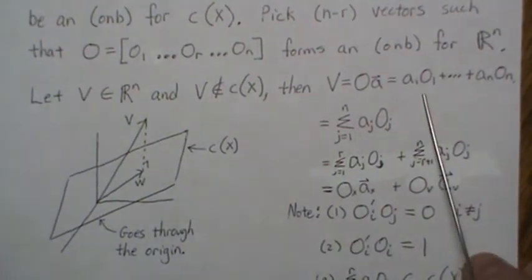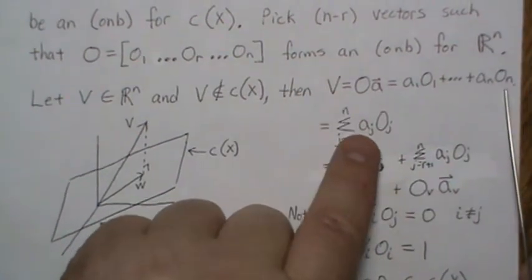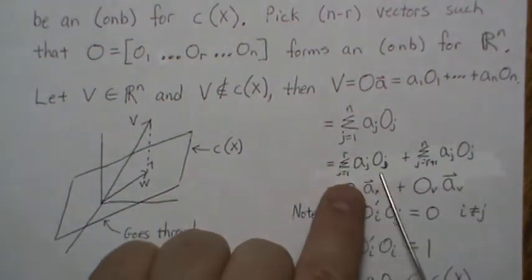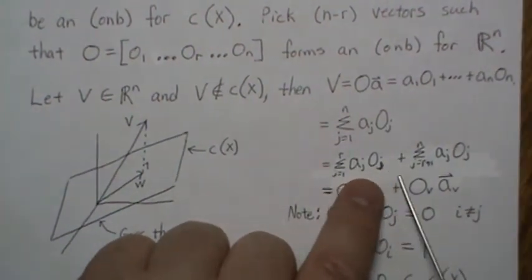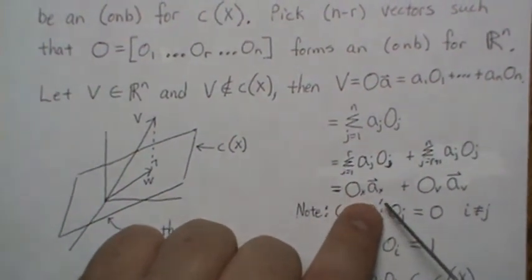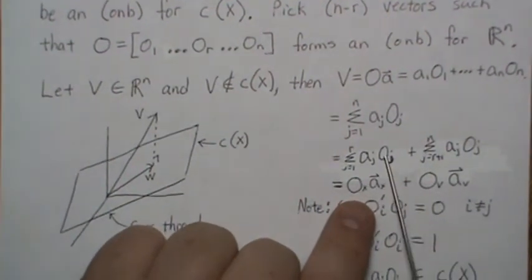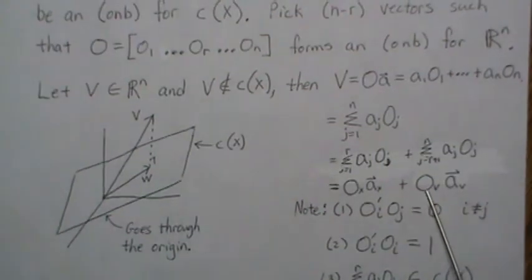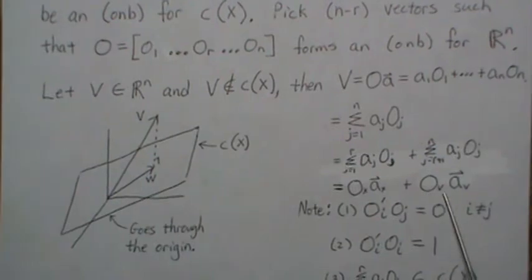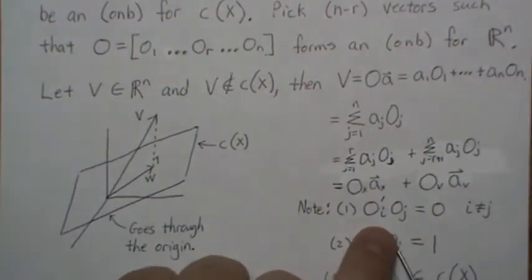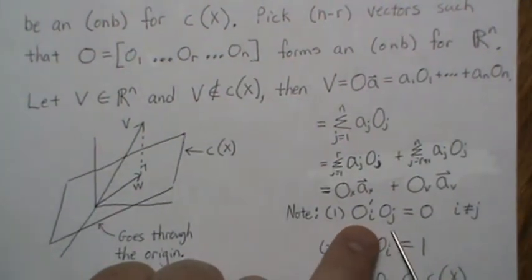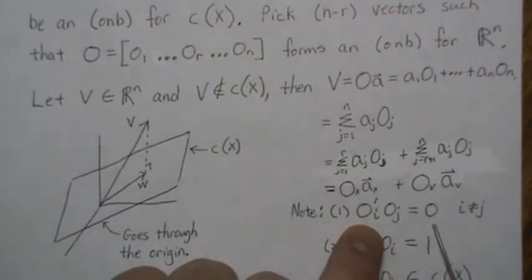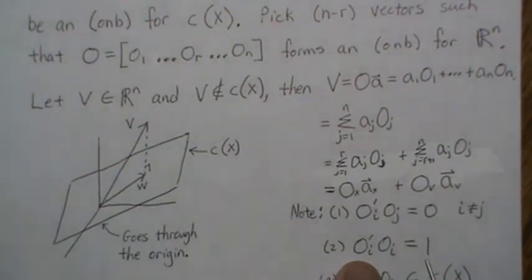V as a linear combination of the orthonormal vectors can be split: the sum from 1 to R, plus the sum from R+1 to N. Writing this in matrix form: OX times a vector AX gives the first part, and OV times AV gives the second part. So V = OX·AX + OV·AV. The key properties of orthonormal vectors are that the dot product of any two different vectors is zero (orthogonal) and the dot product of a vector with itself is one.